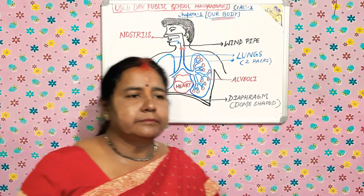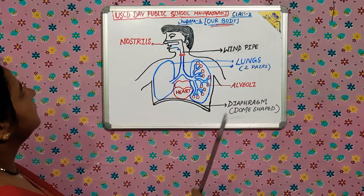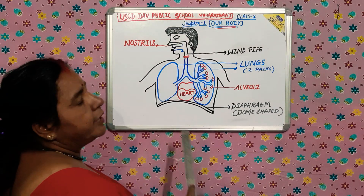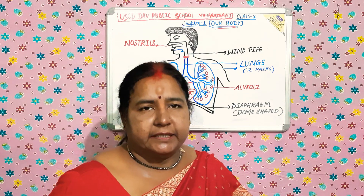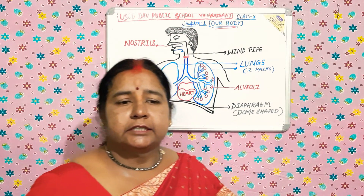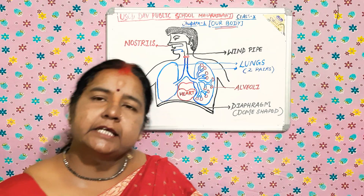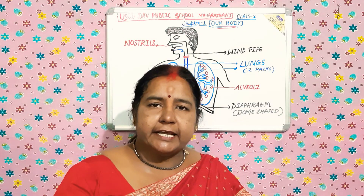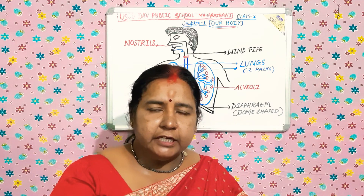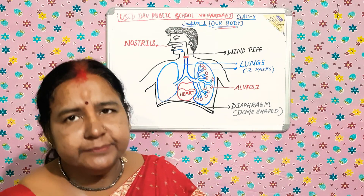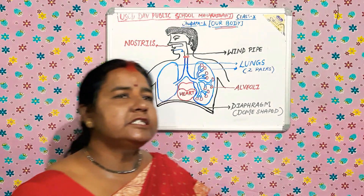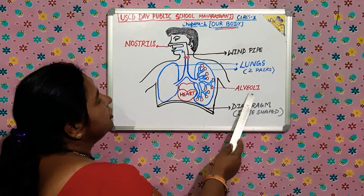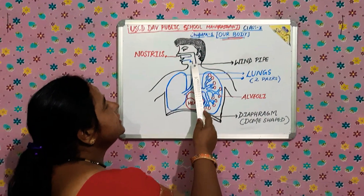This is the picture of the breathing system. What is breathing? Taking in oxygen and giving out carbon dioxide is called breathing. Breathing is a process in which we take in oxygen and give out carbon dioxide. The breathing system contains organs: nose, windpipe, lungs, alveoli, and diaphragm.